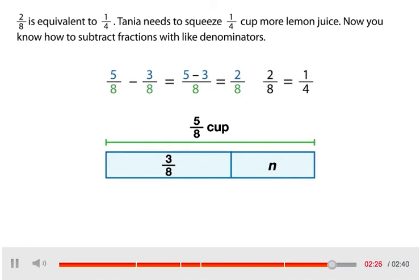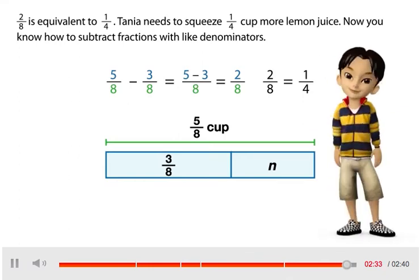2 eighths is equivalent to 1 fourth. Tanya needs to squeeze 1 fourth cup more lemon juice. Now you know how to subtract fractions with like denominators.